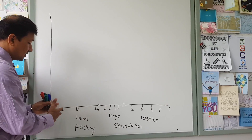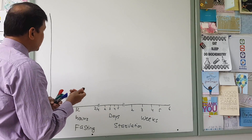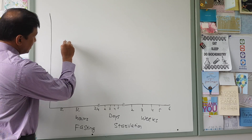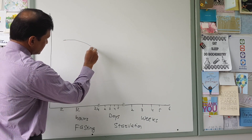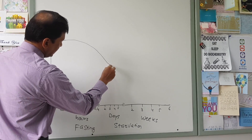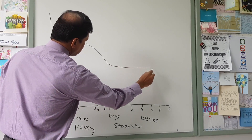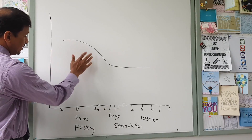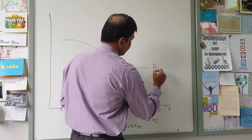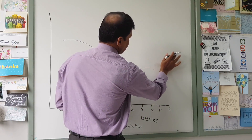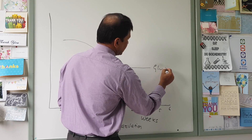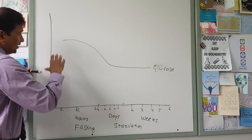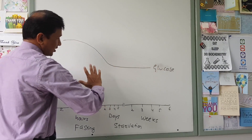Now what happens during fasting condition, 2 to 3 hours after meals? Our blood glucose level falls down. So the blood glucose concentration continuously falls and then it will just maintain a constant phase. This is what happens under fasting conditions — there is a continuous fall in glucose level and then it maintains a constant phase.